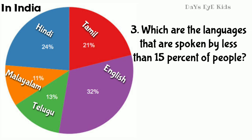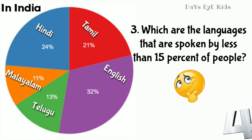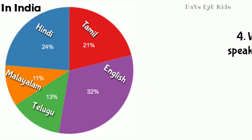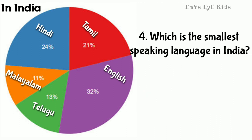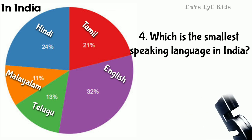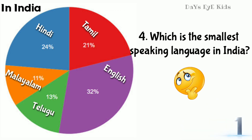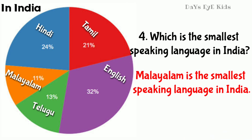Which are the languages that are spoken by less than 15% of people? Malayalam and Telugu are spoken by less than 15% of people. Which is the smallest speaking language in India? Malayalam is the smallest speaking language in India.